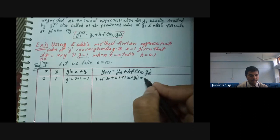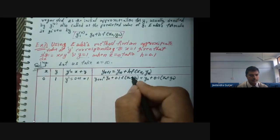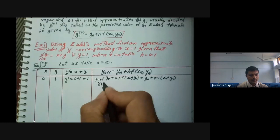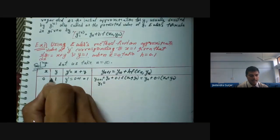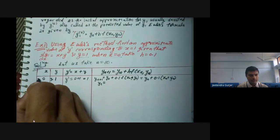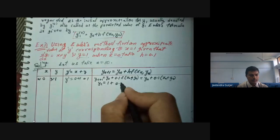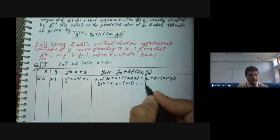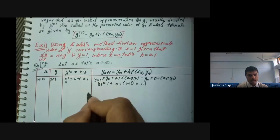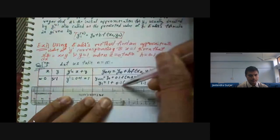For n = 0: x₀ = 0, y₀ = 1, y₀' = x₀ + y₀ = 0 + 1 = 1. Applying Euler's formula: y₁ = y₀ + h·f(x₀, y₀) = 1 + 0.1·(0 + 1) = 1 + 0.1·(1) = 1.1.